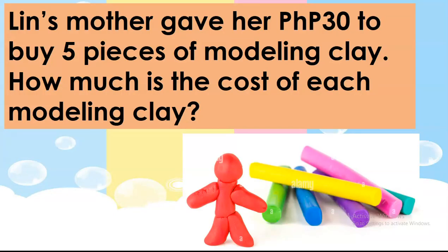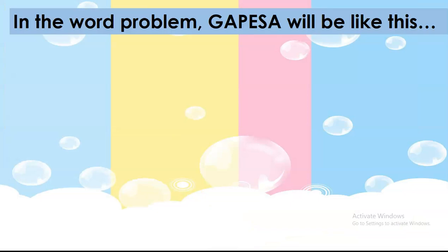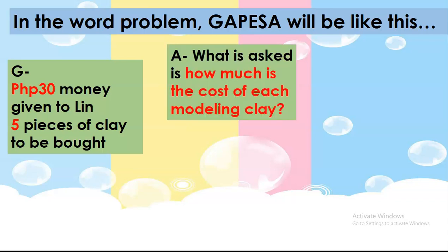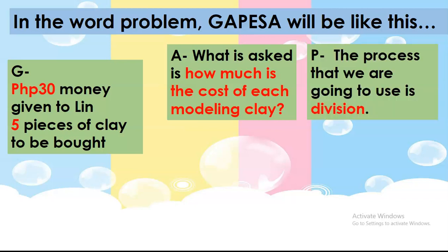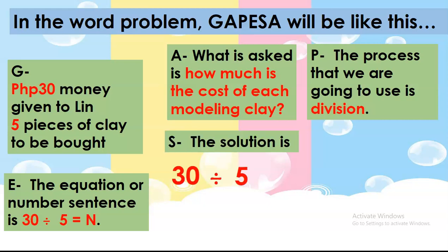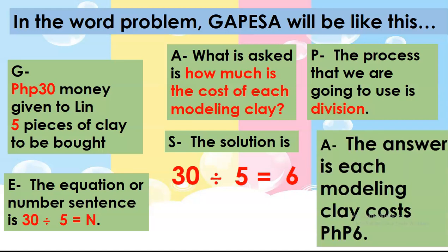Now let's have another example. Lynn's mother gave her 30 pesos to buy 5 pieces of modeling clay. How much is the cost of each modeling clay? In the word problem, GAPESA will be like this. For letter G, we have 30 pesos, which is the money given to Lynn, and 5 pieces of clay to be bought. Letter A: what is asked is how much is the cost of each modeling clay? Letter P, the process is division. For letter E, the equation is 30 divided by 5 equals N. And the solution is 30 divided by 5 equals 6. So the answer is: each modeling clay costs 6 pesos.